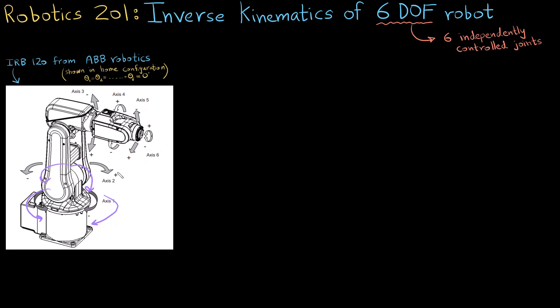So it is a 6 degree of freedom robot, it has got 6 motors and the position that we see it currently is in home configuration.